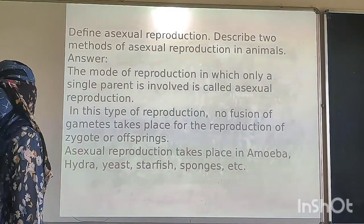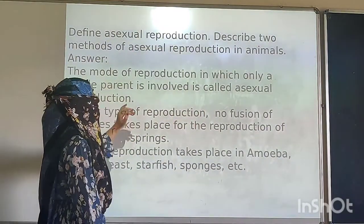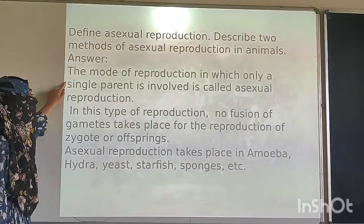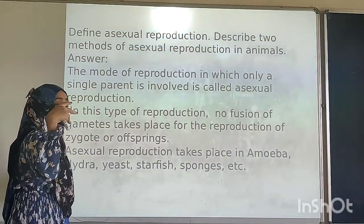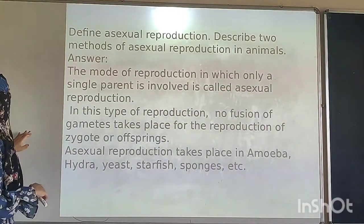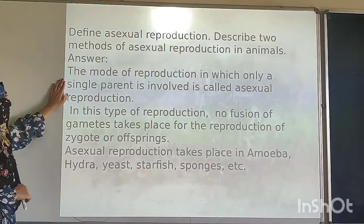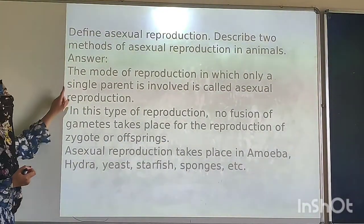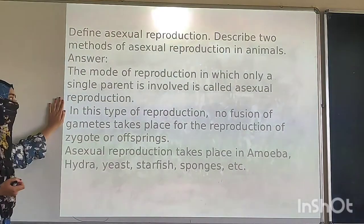First you will write the definition of asexual reproduction, and then after you have to display the methods — you have to write two methods and display them in detail. Asexual reproduction is a type of reproduction in which only one parent is involved.